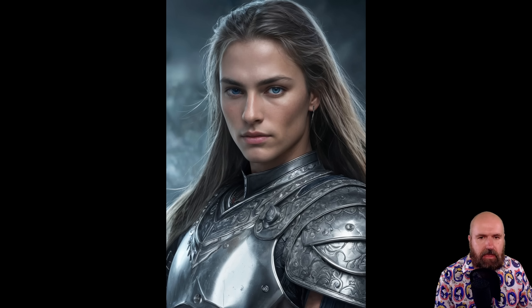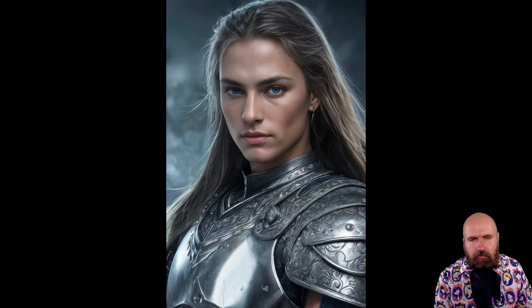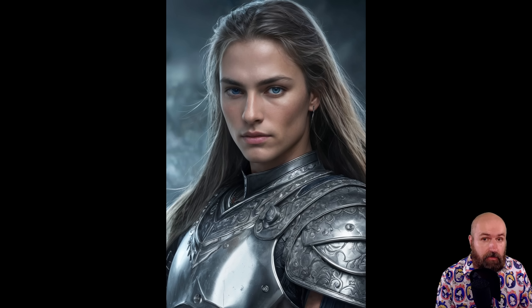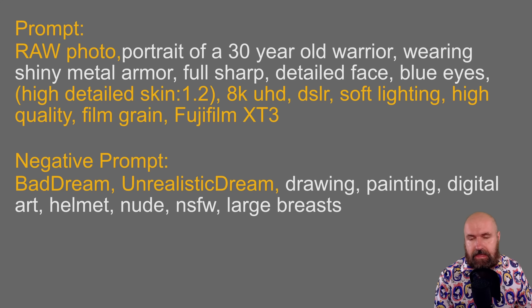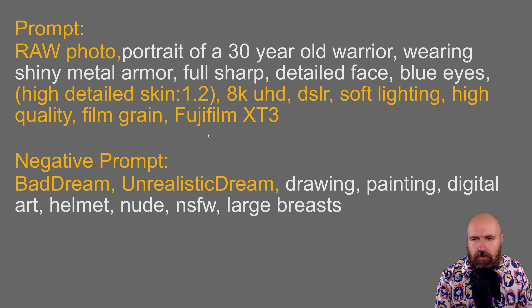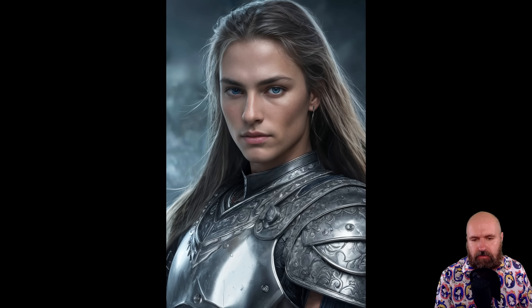Here we have a very nice warrior with blue eyes and very nice armor. If you want, you can improve this armor further by using specific armor LoRAs from Civit AI. The prompt is very similar — up here I wrote 'portrait of a 30-year-old warrior wearing shiny metal armor.' That is an important part because otherwise you might get a dull or plain armor. Because we have 'shiny metal armor' in the prompt, you can see the breastplate has nice reflections and a parade-style look.